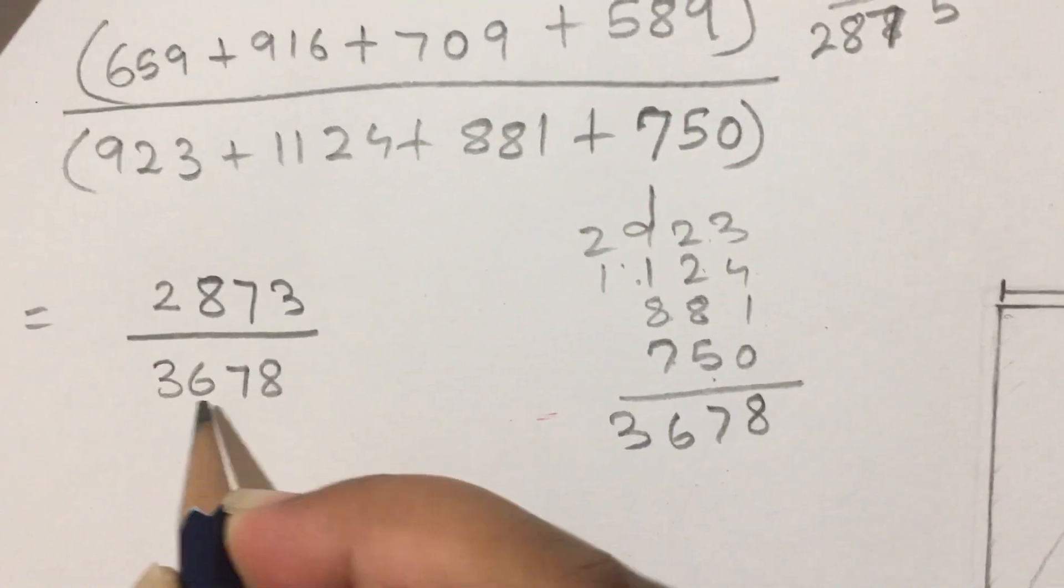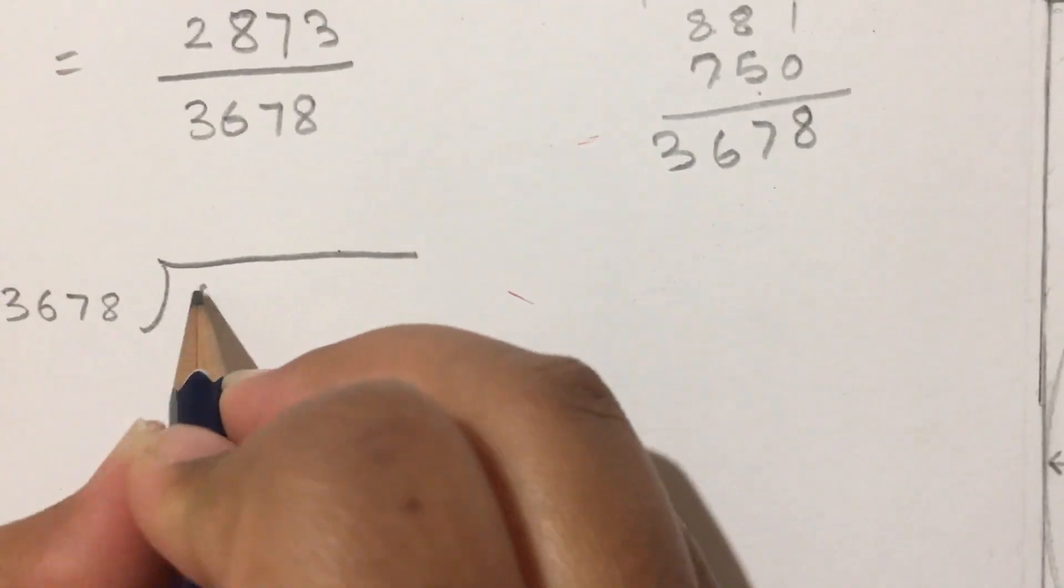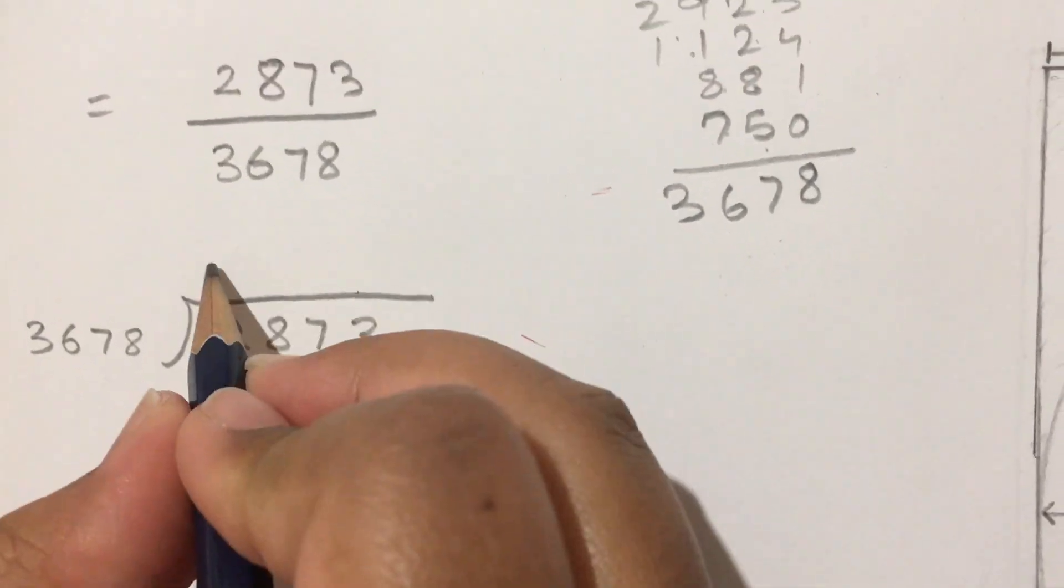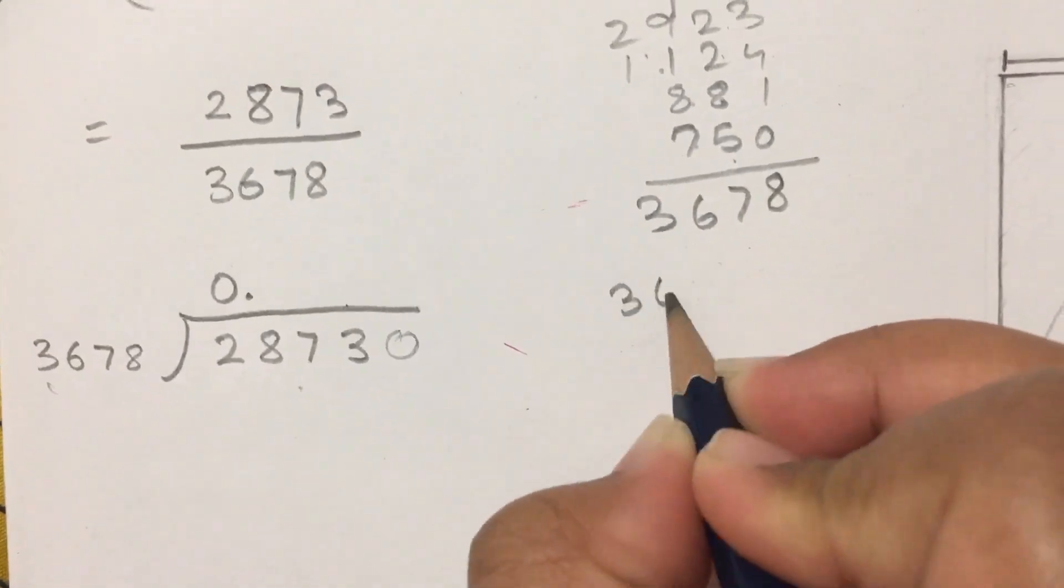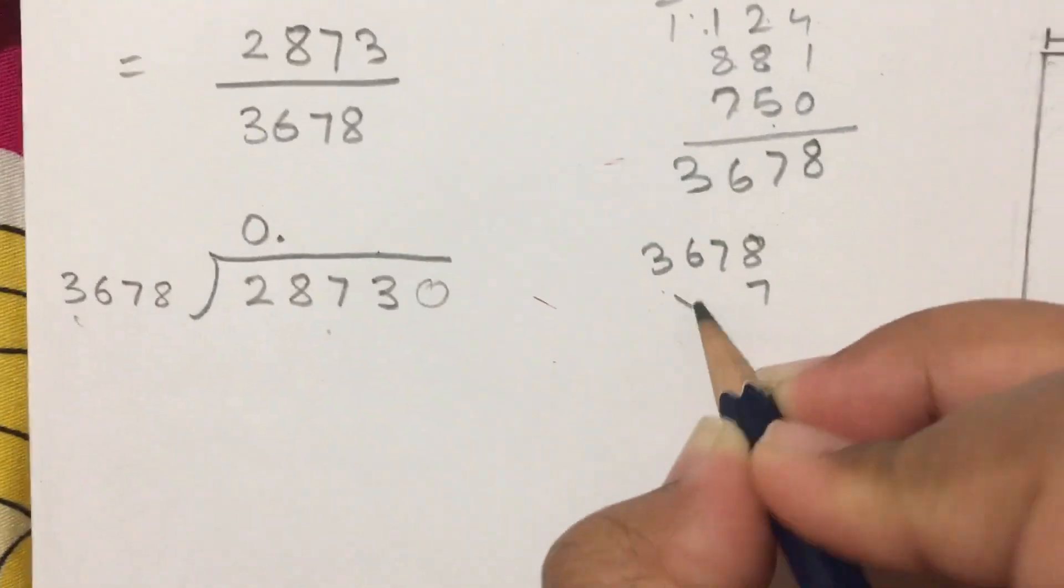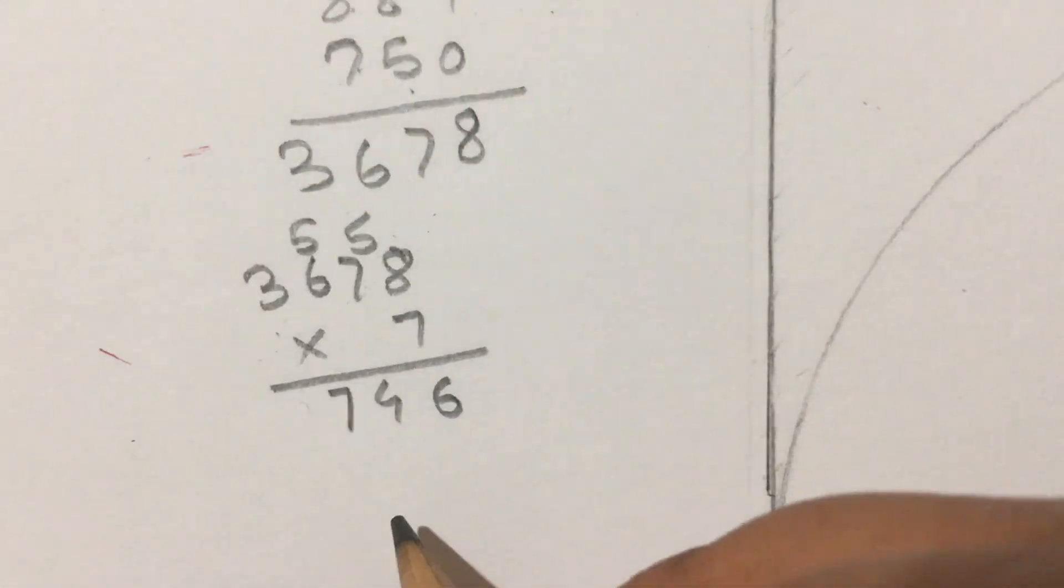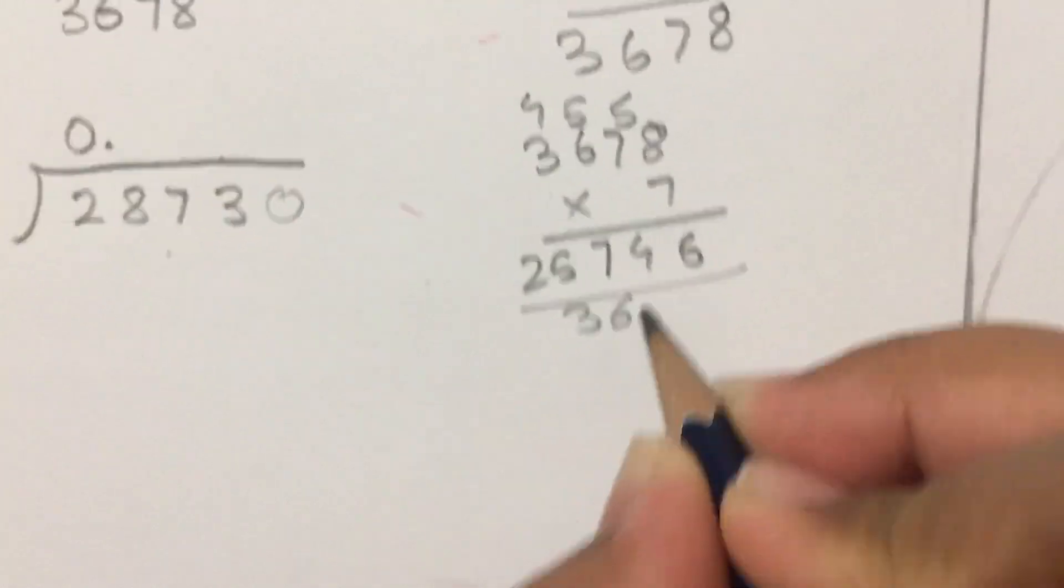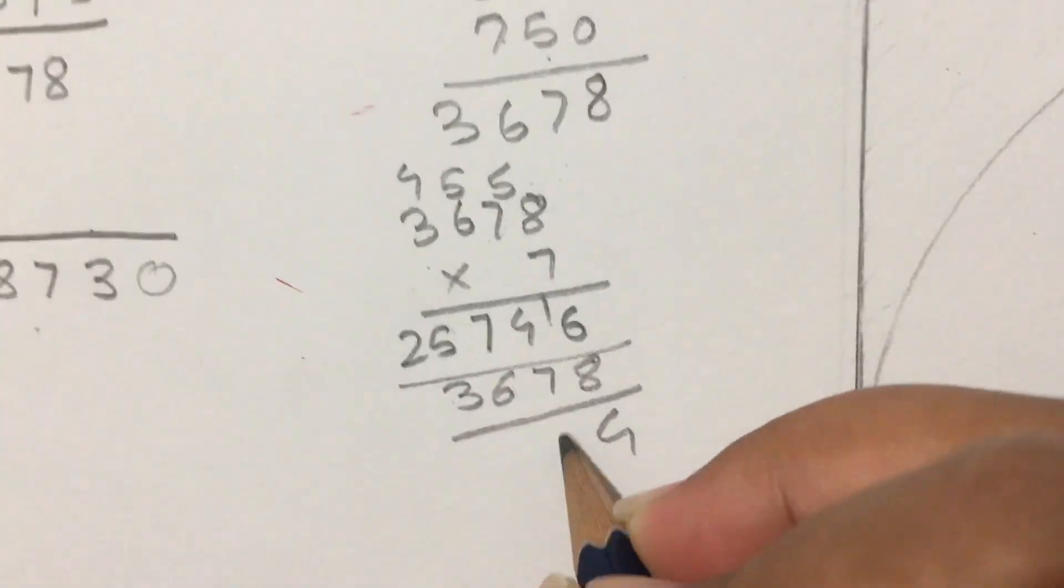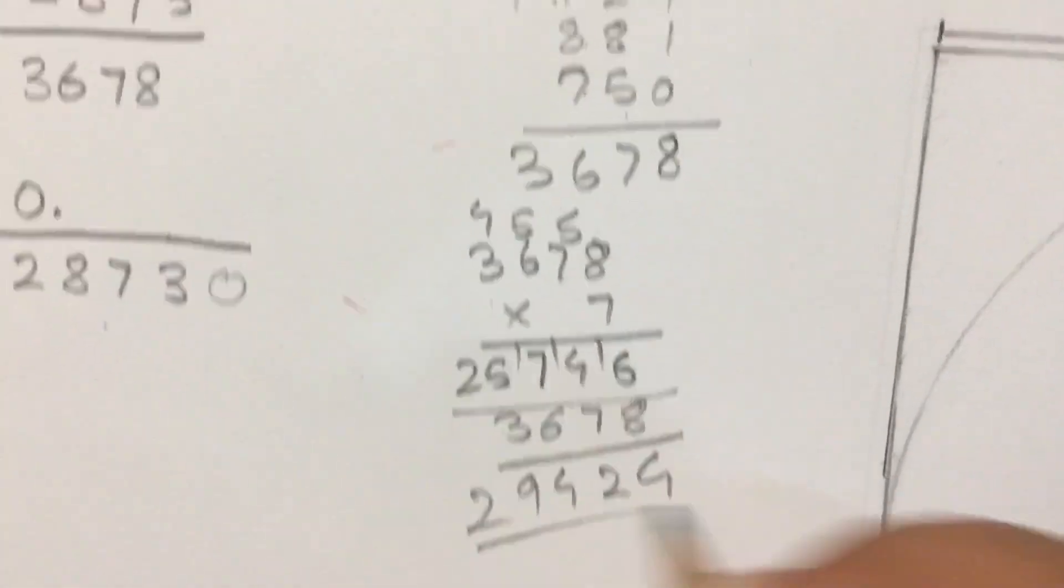So 2873 divided by 3678. The divisor is less than the dividend, so we add a zero point and add a zero to the dividend. I think I'm going to multiply the divisor by 7. I got an answer of 25,746. I'm going to try and see if 8 times works as well—it doesn't work.